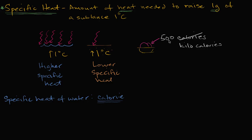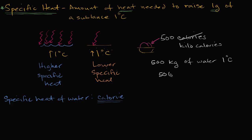There are a couple of ways to think about 500 kilocalories. You could think of it as having enough energy to raise 500 kilograms of water one degree Celsius. Or, since a grown person is roughly 50 to 70 kilograms and maybe composed of about 50 kilograms of water, that 500 kilocalories could raise 50 kilograms of water 10 degrees Celsius.